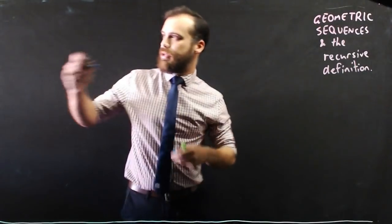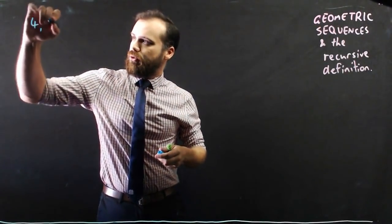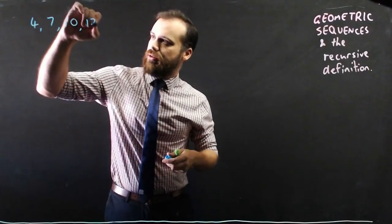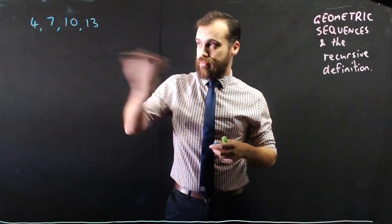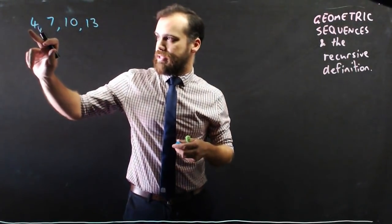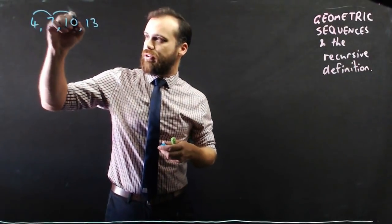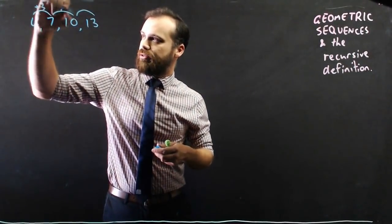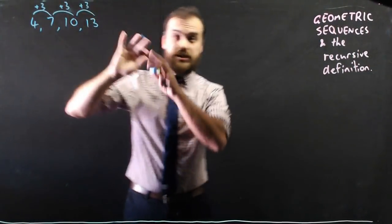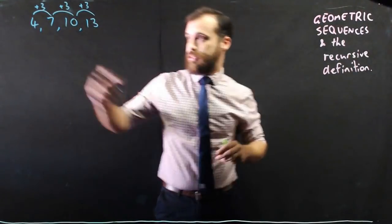Now you might remember arithmetic sequences: 4, 7, 10, 13. That's an arithmetic sequence because it has a common difference, every time we're adding 3. That's an arithmetic sequence but we're not doing arithmetic sequences.